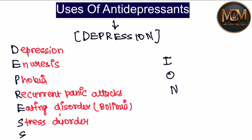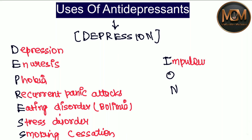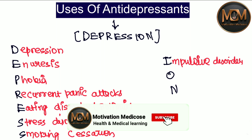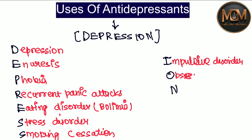From the second S we have Smoking cessation. From I we have Impulsive disorder. From O we have Obsessive compulsive disorder. And from N we have Neuropathic pain.